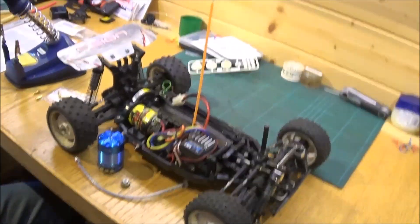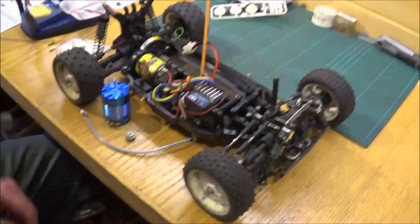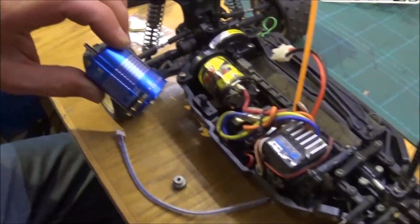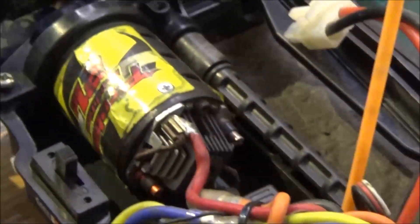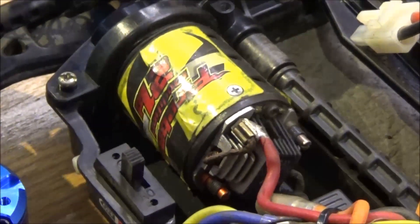Hi, today we're going to talk about putting this 17.5 turn brushless motor, a sensored brushless motor, into Alfie's TT02B Neo Scorcher.